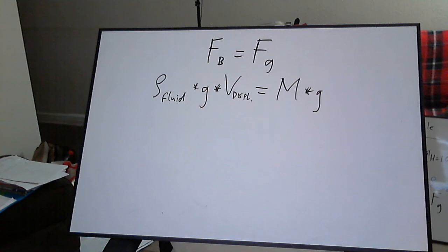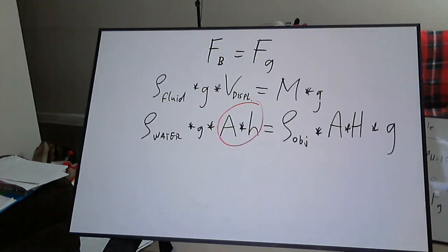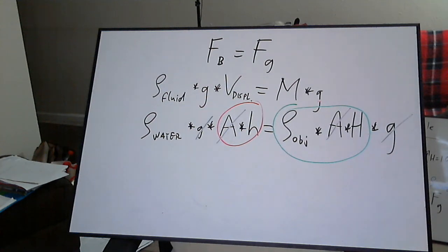Substitute in for the forces. Notice that displaced volume can be expressed as area times the depth to which the floating object sinks, and the mass of the object can be expressed as its density times its volume. That volume is equal to the area times the height of the entire object. We can simplify and solve for the unknown.